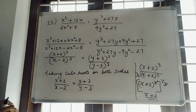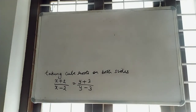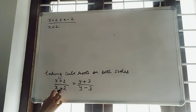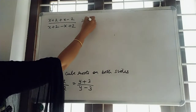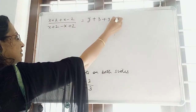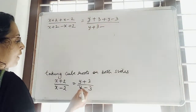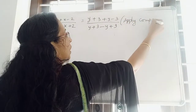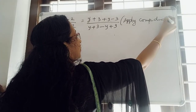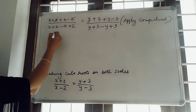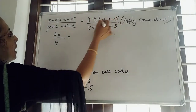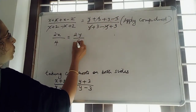After this, we apply componendo dividendo again. So, (x + 2 + x − 2) divided by (x + 2 − (x − 2)) is equal to (y + 3 + y − 3) divided by (y + 3 − (y − 3)). Simplifying: numerator 2x divided by 4, equals 2y divided by 6. The 2s cancel.